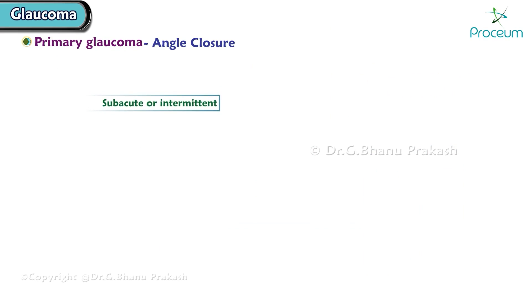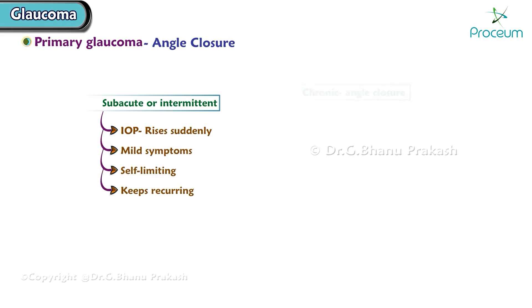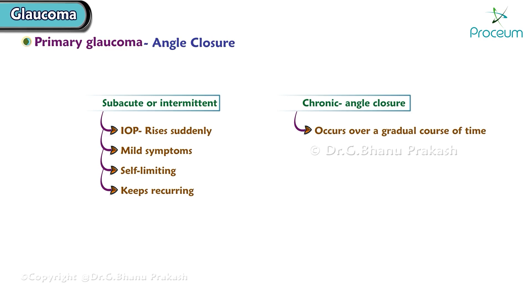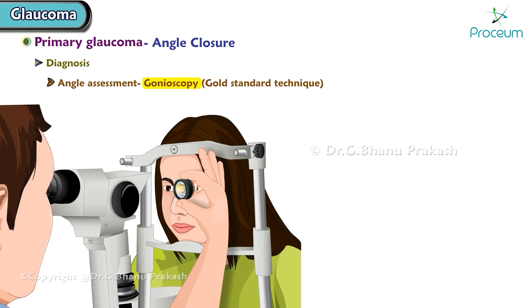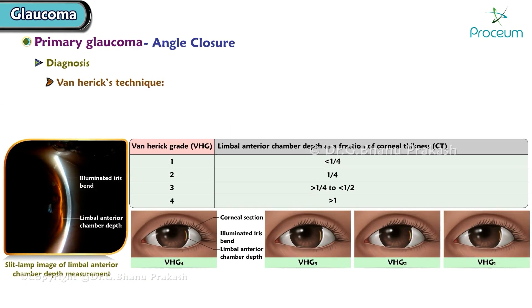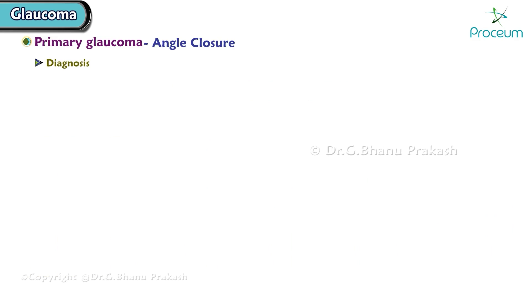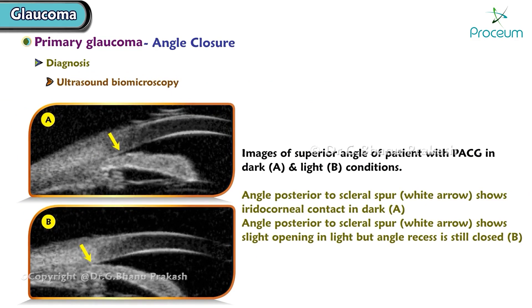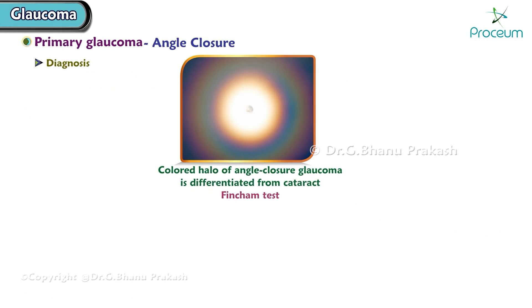In subacute or intermittent angle closure glaucoma, intraocular pressure rises suddenly, symptoms are mild, it is self-limiting, and keeps recurring. Chronic angle closure occurs over a gradual course of time and the patient mostly stays asymptomatic. Diagnosis of angle assessment is done by gonioscopy, the gold standard technique. Van Herick's technique — peripheral depth of anterior chamber less than one-fourth normal corneal thickness — is suggestive of angle closure. Ultrasound biomicroscopy is also used. Colored halos of angle closure glaucoma are differentiated from cataract by the Fincham test.